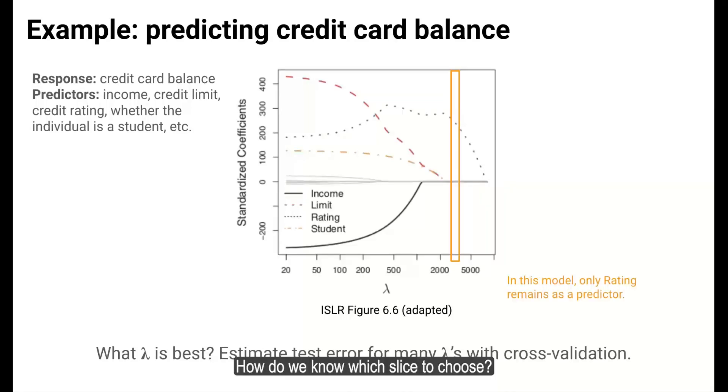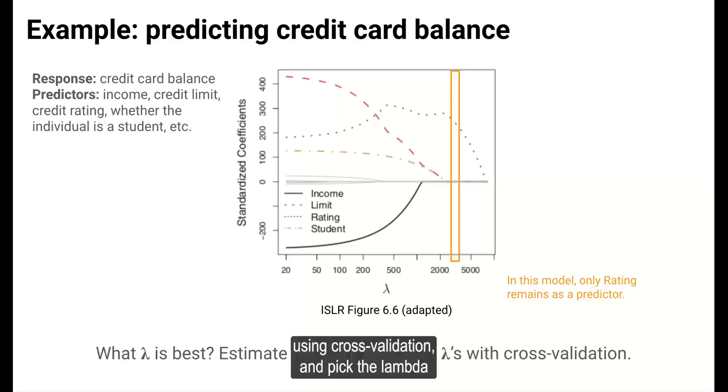How do we know which slice to choose? In other words, which lambda to pick? Well, for each lambda we try, we can estimate the test error, the true error rate on new data, using cross-validation, and pick the lambda that gives us the lowest estimated test error.